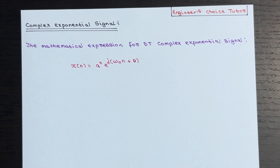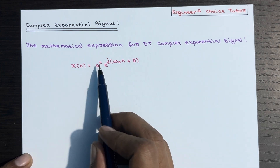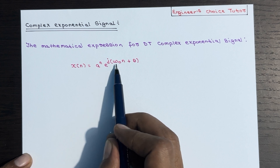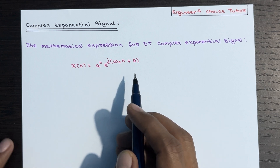Hey everyone, in today's lecture we are going to dive into the fascinating world of discrete-time complex exponential signals. The discrete-time complex exponential signal can be expressed as x of n is equal to A to the power n, multiplied by e to the power j times (omega-naught n plus theta).